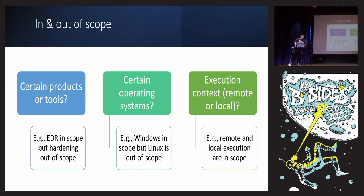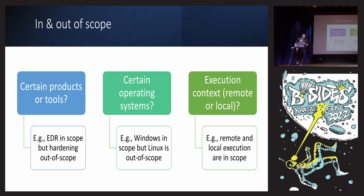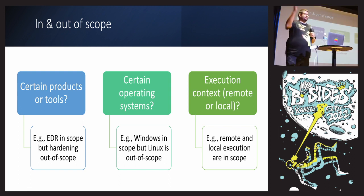Certain operating systems — is Windows in scope but Linux is out? And also consider the execution context: is this a remote execution, or something dropped on the box locally? Or is it a privilege escalation? I went to a talk earlier about SafeBreach — I hadn't seen that tool before, it looks pretty cool. Shout out to them.